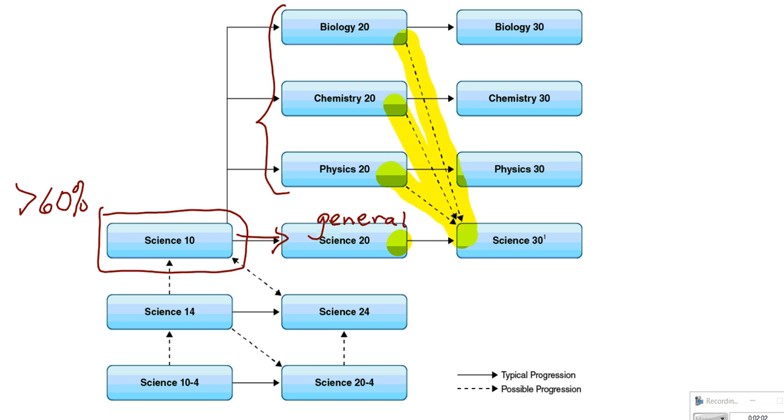Science 30 is a good choice for students who need a 30 level science course and is recognized by many post-secondary programs.